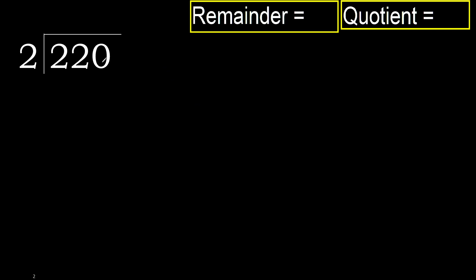220 divided by 2. 2 is not less than 4 with 2. Here, 2 multiplied by which number is nearest to 2 but not greater? 2 multiplied by 2 is 4.